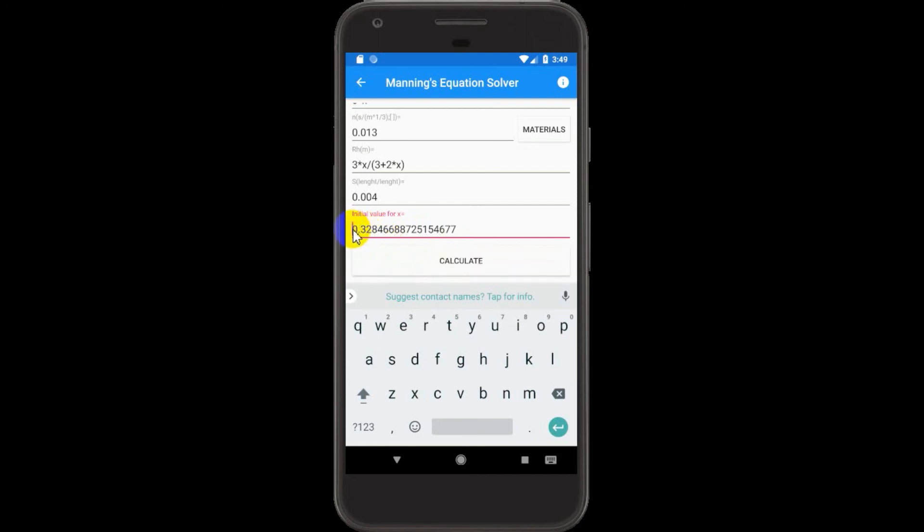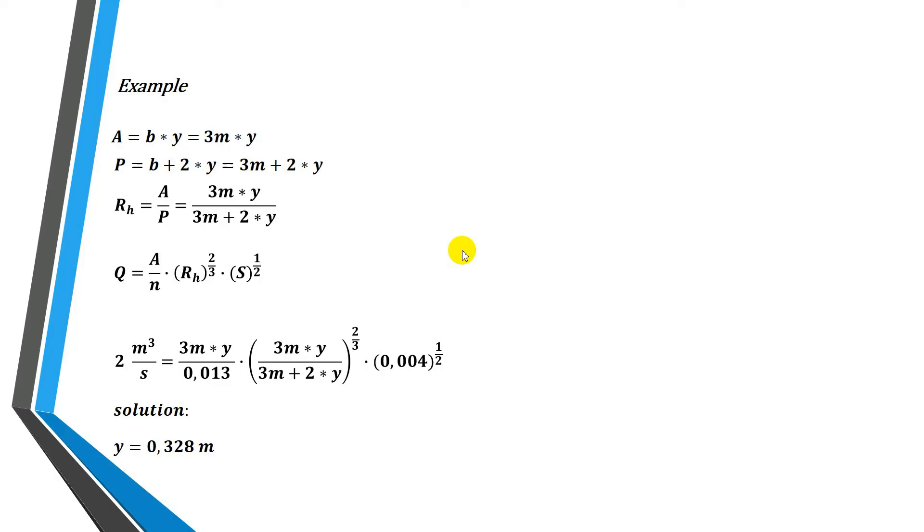And then we press calculate, and this is the root. This is the root of that equation. The depth, then, is 0.328 as an approximate value. And finally, the solution to this equation is 0.328 meters.